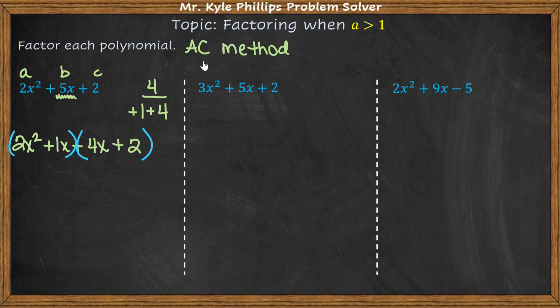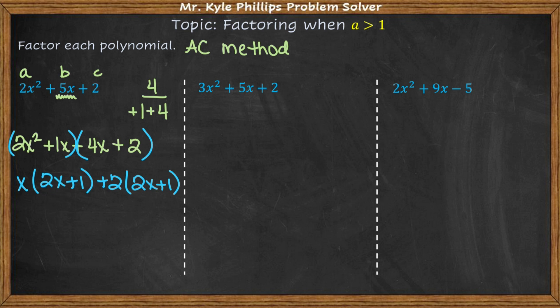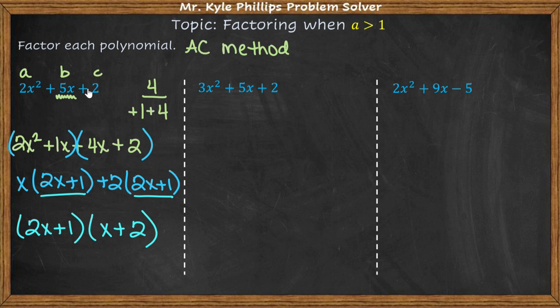What I like about the bust-the-b or AC method is that you never have to worry about rearranging terms for factor by grouping — you always compare the first two and the last two. So I factor out an x from the first pair and I'm left with 2x plus 1. Then I factor out the common binomial and my answer is (2x + 1)(x + 2). That's the factored form of this polynomial.